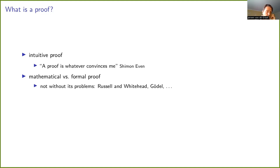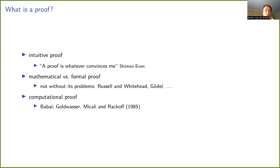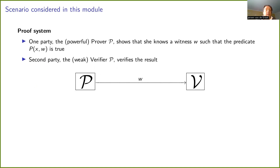This is not what we are going to approach in this class. We are going to talk about a computational notion of a proof, which was introduced in 1985 by coincidence by two groups: one was Laszlo Babai, and the other was the group of Goldwasser, Micali, and Rackoff.